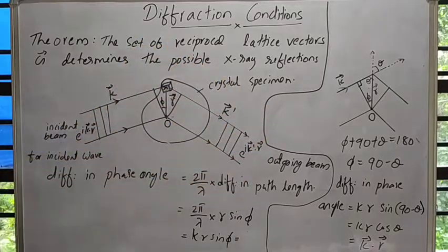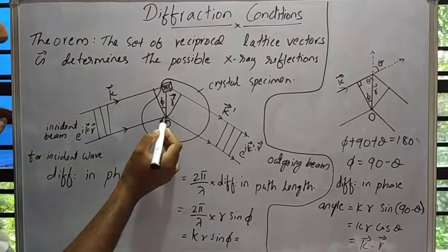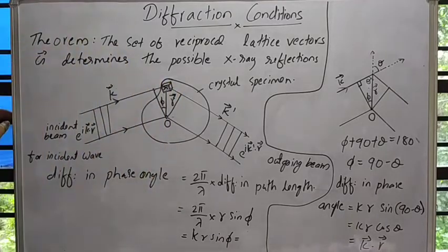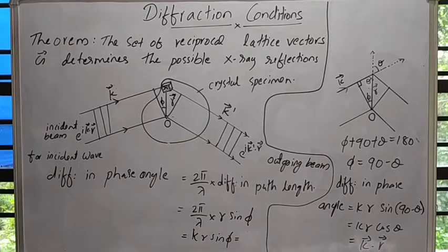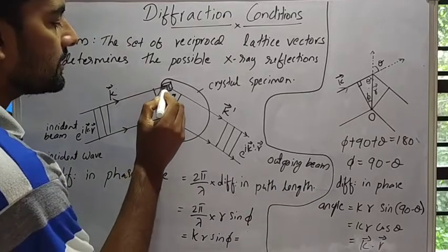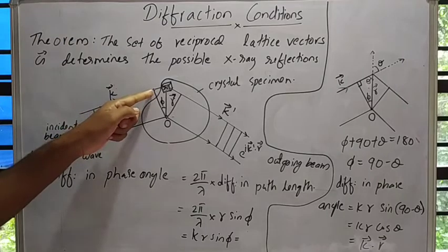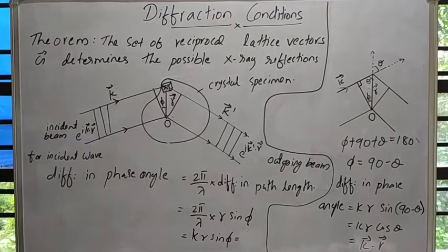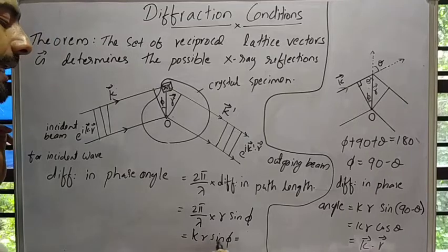This will get diffracted from the crystal, and the outgoing beam has a wave vector k', represented as e raised to ik'·r. The difference in phase angle at point O and at position r for the incident wave is equal to 2π over λ times the difference in path length. The difference in path length is r sinφ, which equals k·r sinφ, where k is the magnitude of the wave vector.